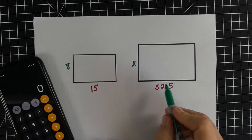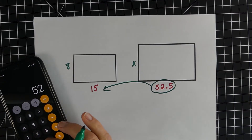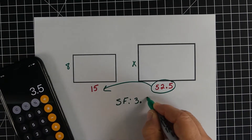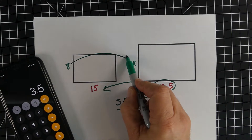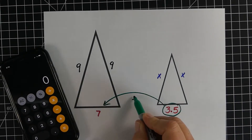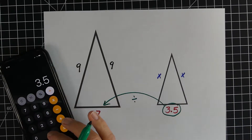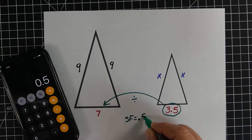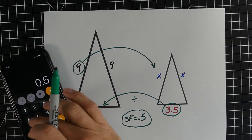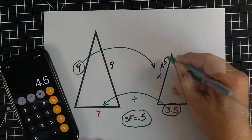Here are a couple more examples. In example one, we have two similar rectangles. Step one: find the scale factor — scaled object divided by original gives us 3.5. Take that 3.5 and multiply it by 8; we get 28, so the missing side is 28. Example two: the triangle on the right is smaller, so dividing gives a scale factor of less than 1 — in this case 0.5. We take the 9 and multiply by 0.5 to get 4.5, and both those sides are 4.5.